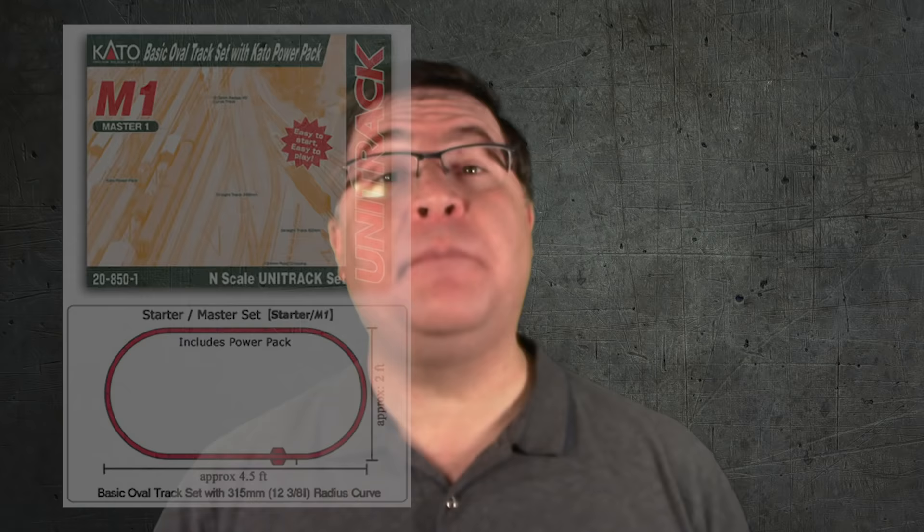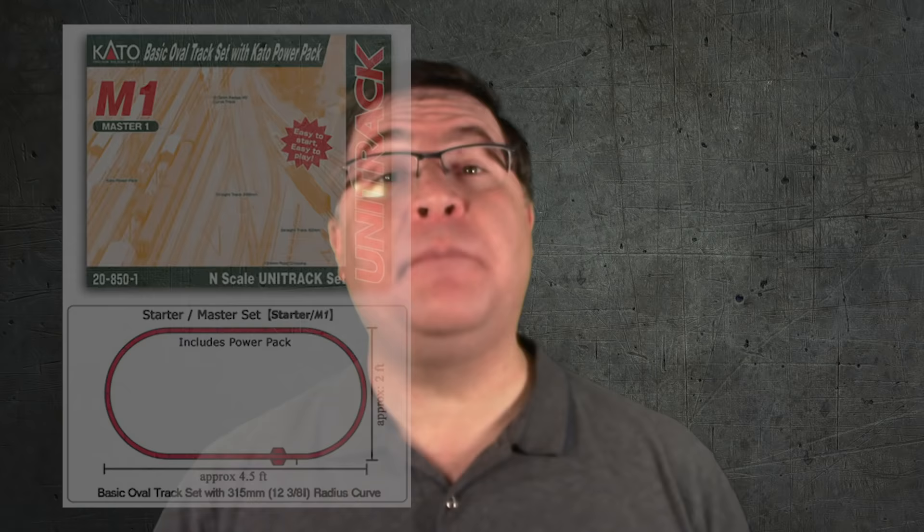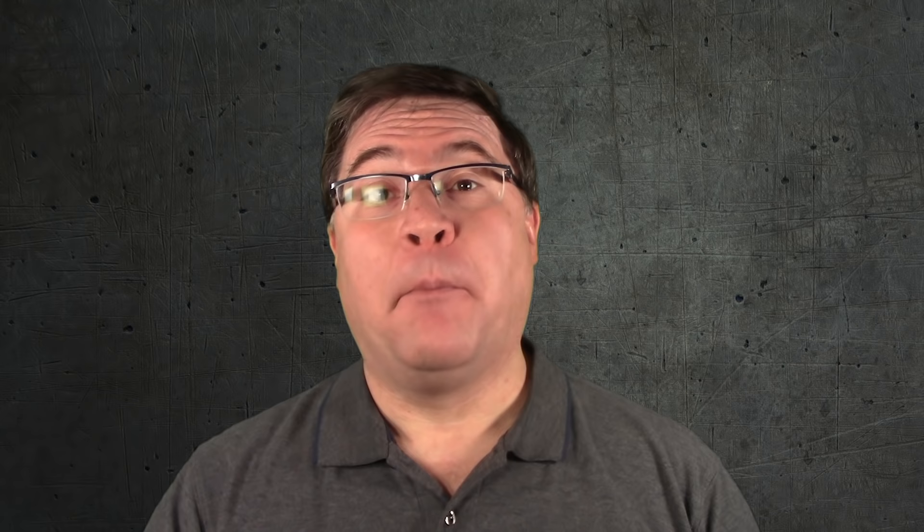For this video, I will be working with track that comes in the M1 Starter Set and V1 Passing Siding Set from Kato Unitrack. The track that comes in these two also combines together in the M2 Starter Set. All of Kato's measurements are in metric using millimeters for the length of track or the radius of a curve. This allows for precision, but if you're not used to metric, converting is not that hard.